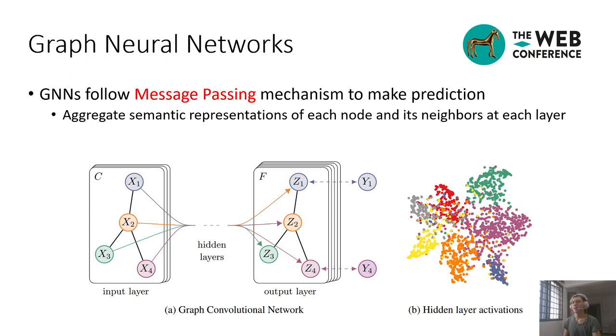Graph classification is a fundamental task on graph data which aims to predict the class labels of entire graphs. The modern tools of choice for this task are graph neural networks. Typically, graph neural networks build node representations from node features and graph topology via the message passing mechanism and then make graph-level predictions by summarizing the node representations through a readout function.